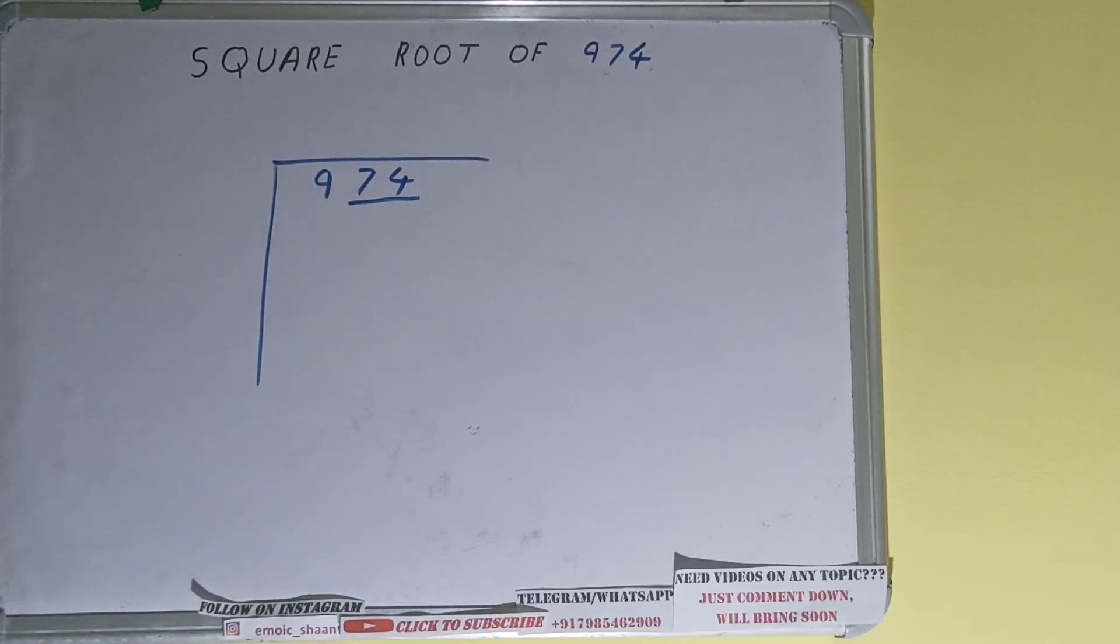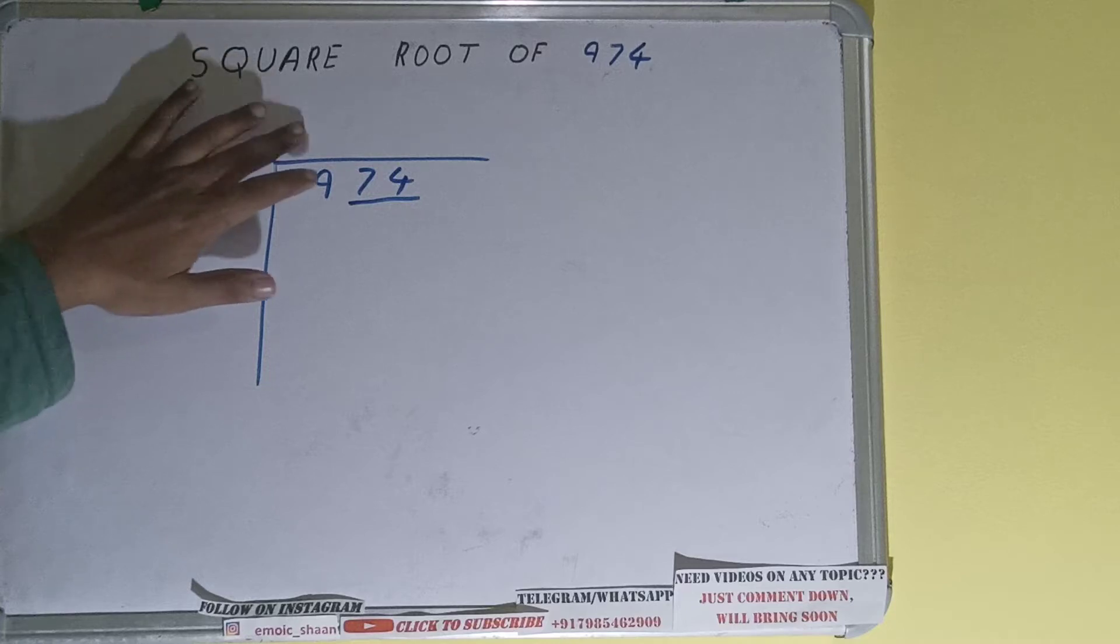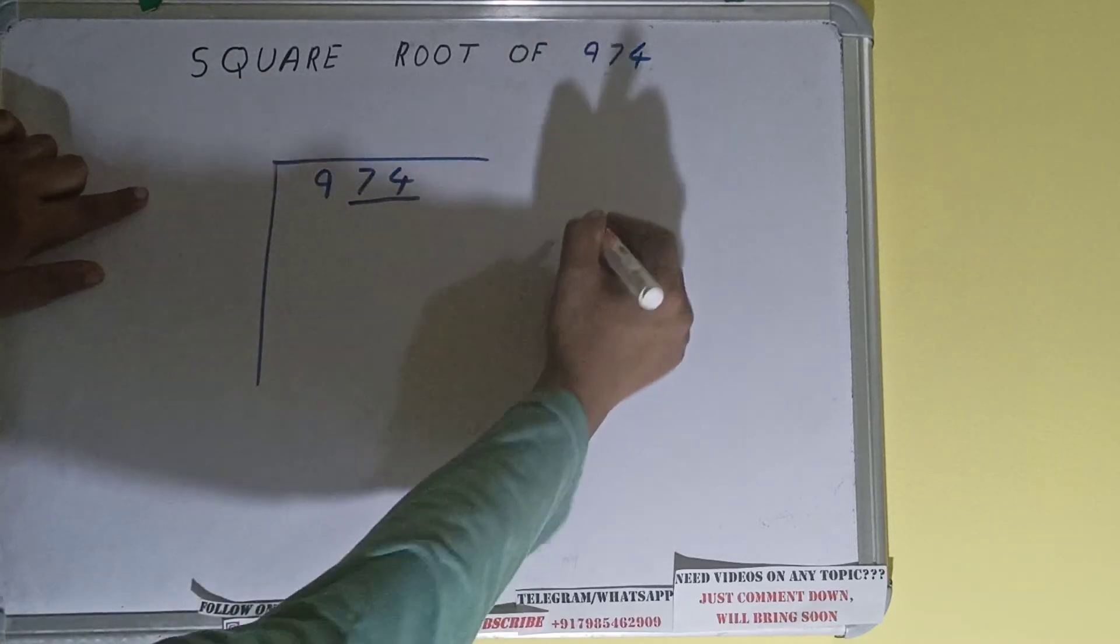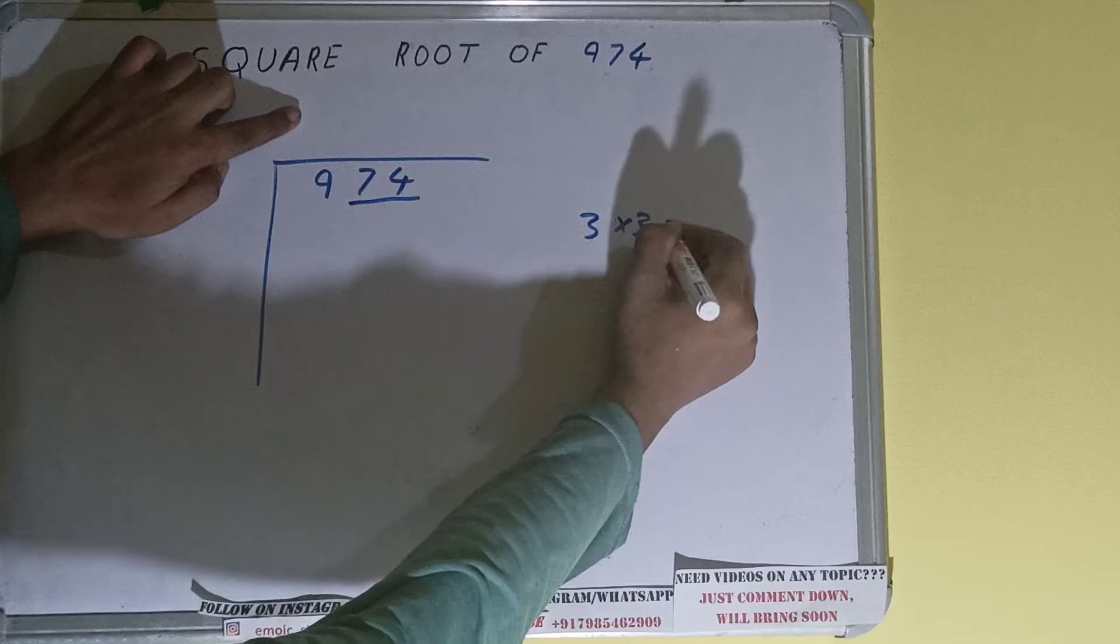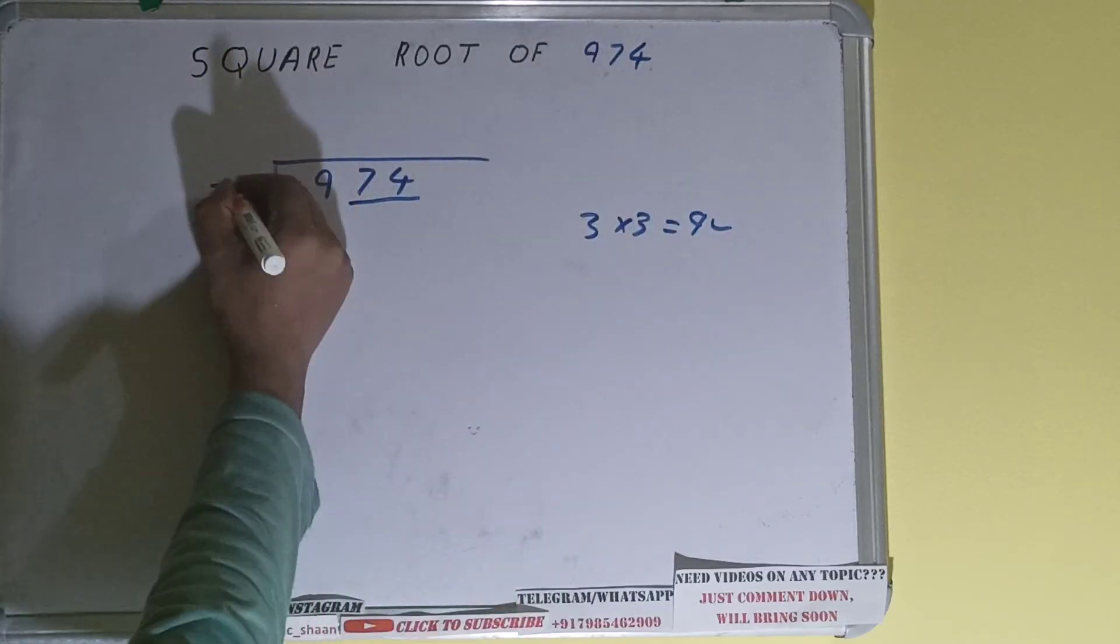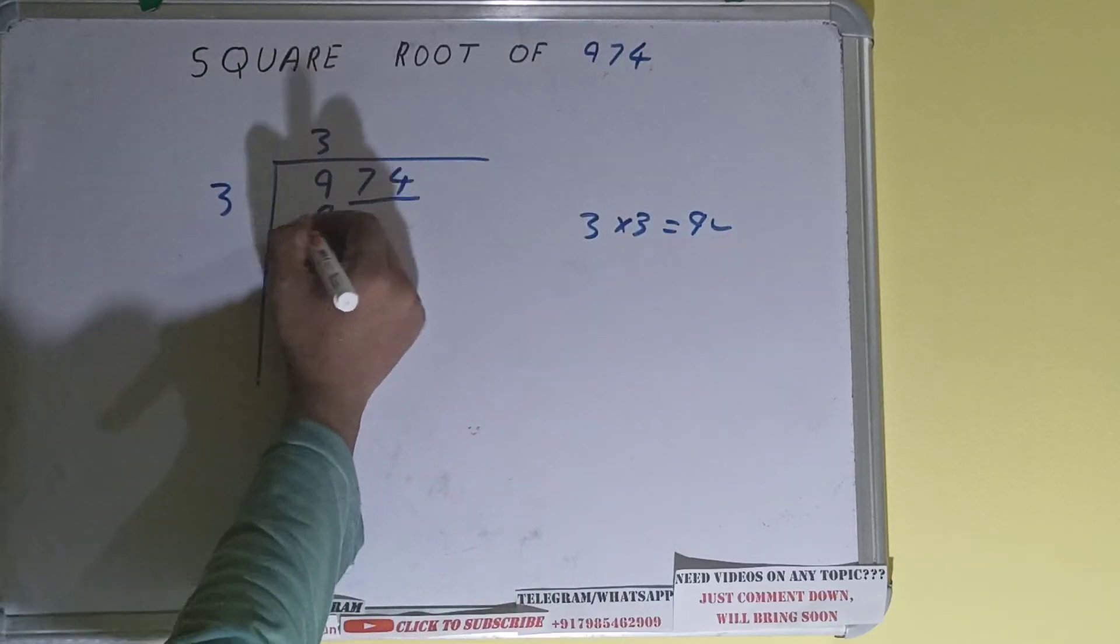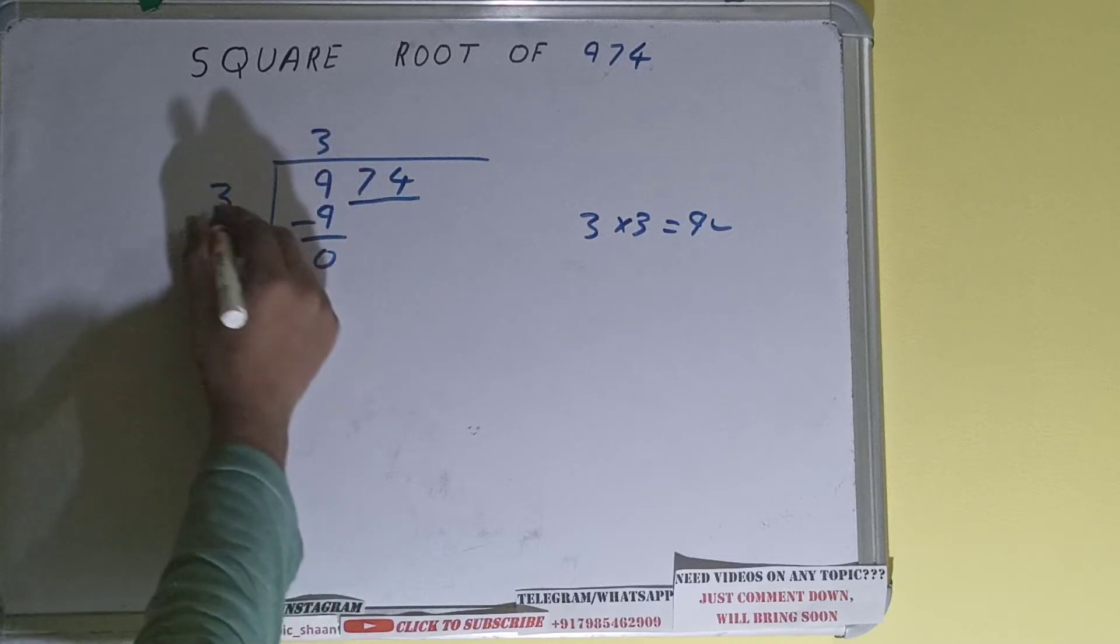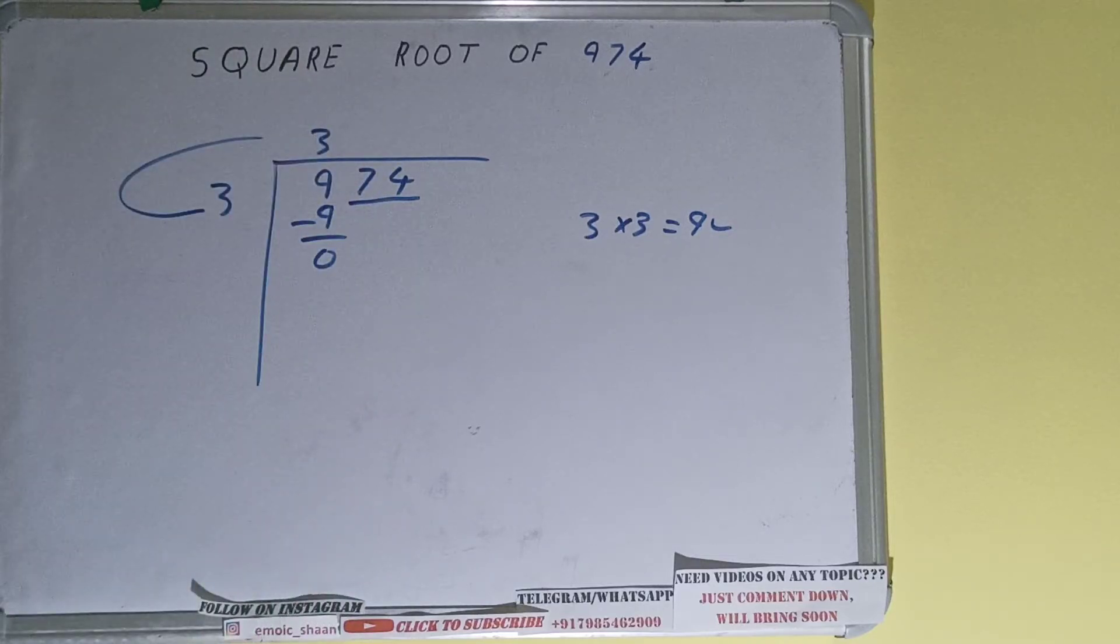The rule is whatever number we write here, we have to write here also. So if we write 3 here and 3 here, it will be 9, which is good to take. So 3 here and 3 here, 9 subtract and 0 will be left. Now we did 3 into 3, so add both: 3 plus 3 will be 6 and keep one digit extra.